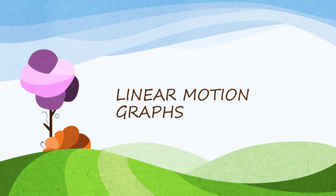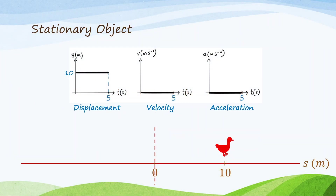Now, let's talk about linear motion graphs. There are three types of linear motion graphs: the displacement-time graph, velocity-time graph, and acceleration-time graph. For a stationary object, the displacement graph is constant, velocity is zero because it is not moving, and acceleration is zero. For this example, this duck has a displacement of positive 10 meters, which is constant — meaning the duck is 10 meters in front of the origin and is stationary at the 10-meter point. Not moving. Velocity is zero.